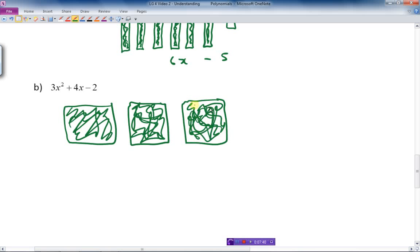Here's an x squared here, an x squared there, and another x squared. And we have 4x. So that means I have to do this: 1, 2, 3, 4. And those are positive, so I fill them in, too.